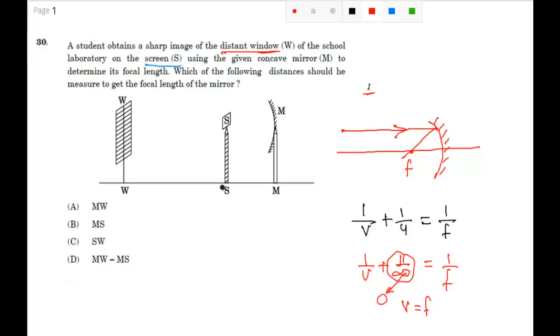So very simple guys. That means your image is forming on focus, and that means the image is forming on this screen also. That means this screen is on focus. So if you want to determine the focal length of this concave mirror, what you have to do? Simple. You determine the distance of this screen from the mirror.